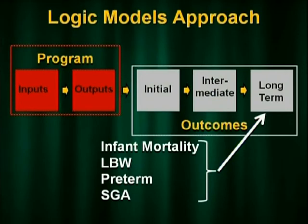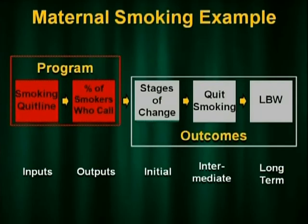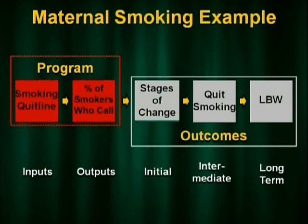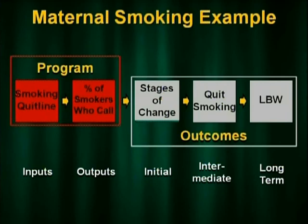Let's give an example. Most states have a quit line, and the literature documents that smoking quit lines can help reduce maternal smoking. If you can't have a stop smoking program in each and every prenatal clinic, the quit line can be an effective strategy. The outputs you'd want to see are how many smokers actually used the quit line — not did they quit, but did they use it as a resource. From the smoking literature, we should see changes in the stages of women's smoking patterns as a leading indicator for quitting. Then we can look at quit rates, which have a documented effect on low birth weight and preterm births. That's how we can measure through more metrics than just the final outcome.